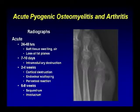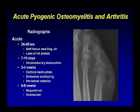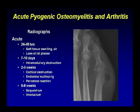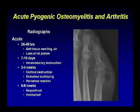Radiographs are good at showing bony changes but are not very sensitive in the early stages of osteomyelitis. In the first 24 to 48 hours, you only see soft tissue swelling and loss of fat planes, occasionally with air near a joint. After seven to ten days, intramedullary destruction may appear. After two to four weeks, cortical destruction and periosteal reaction develop. After six to eight weeks, you finally see a sequestrum or involucrum.